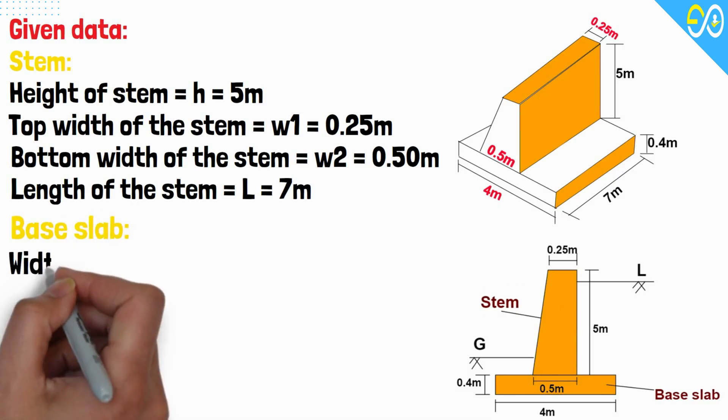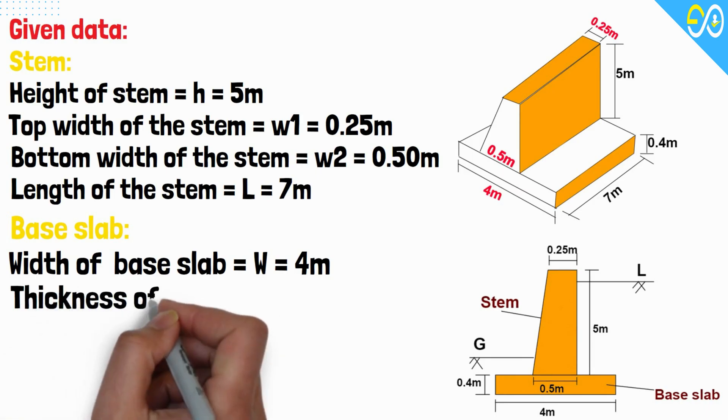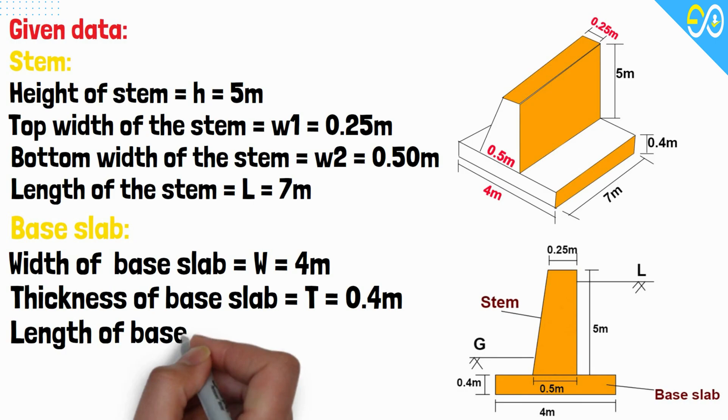Base slab: Width of base slab equals 4 meters. Thickness of base slab equals 0.4 meters. Length of base slab equals 7 meters.